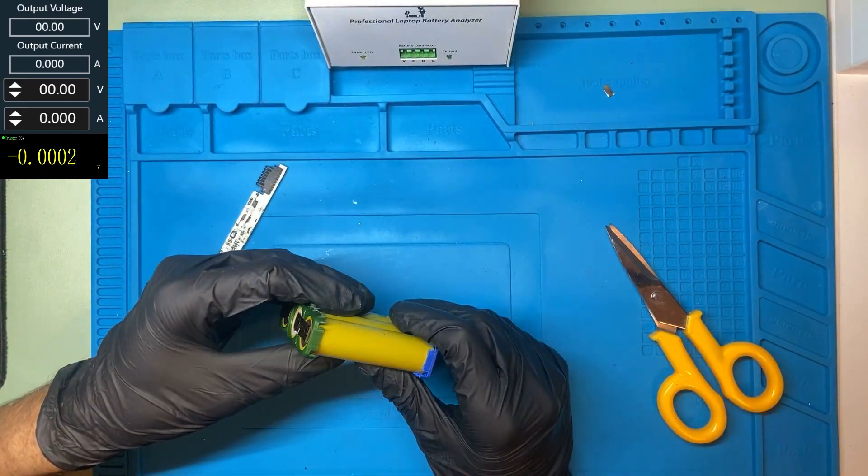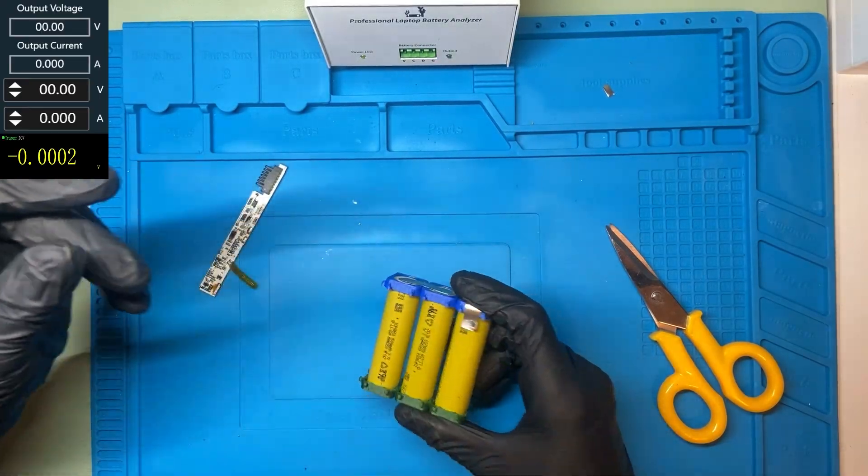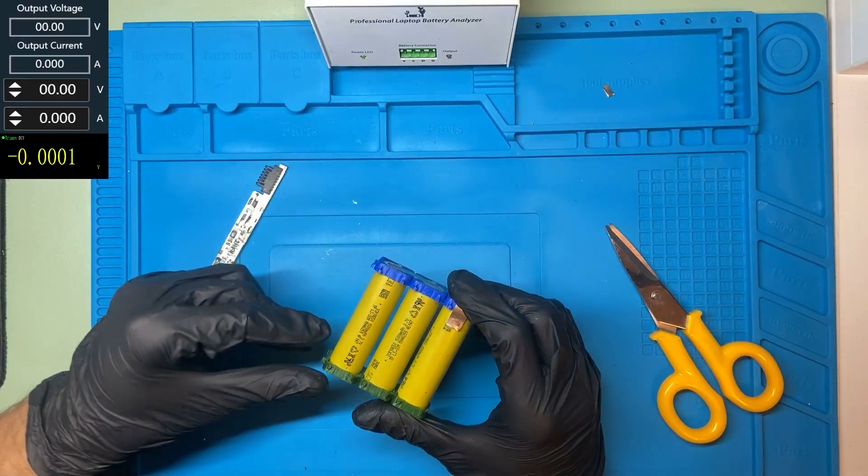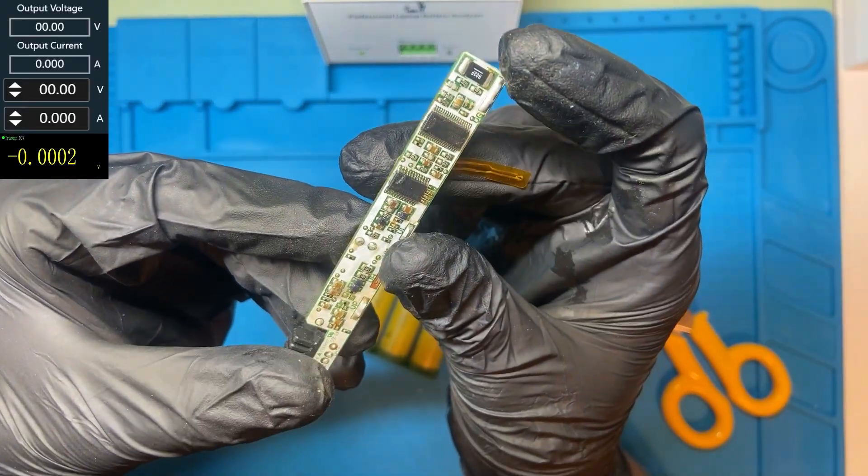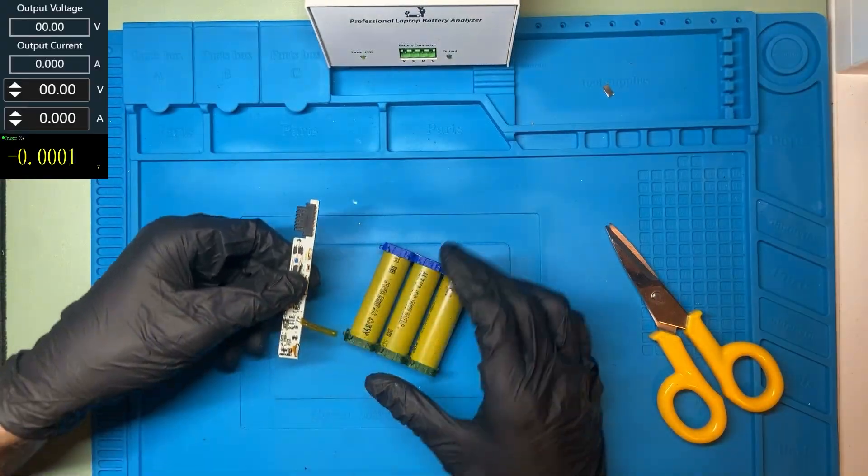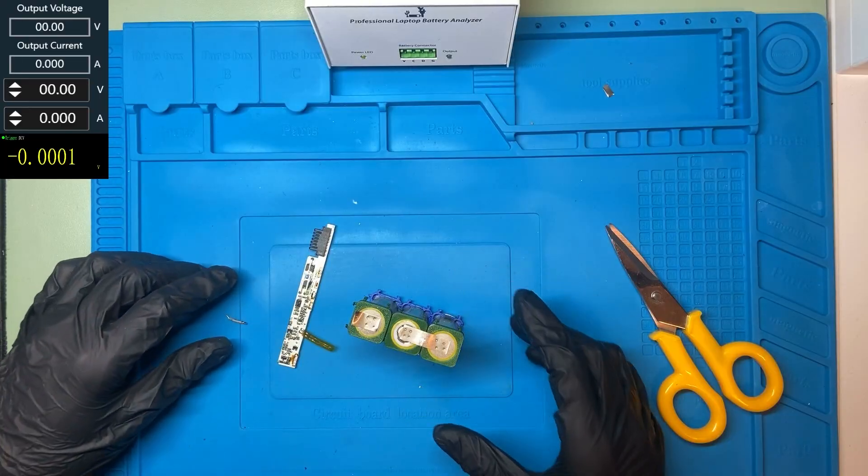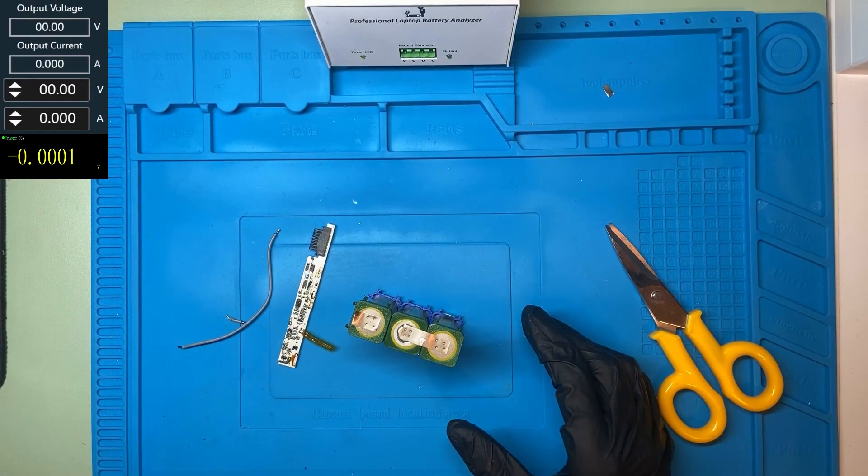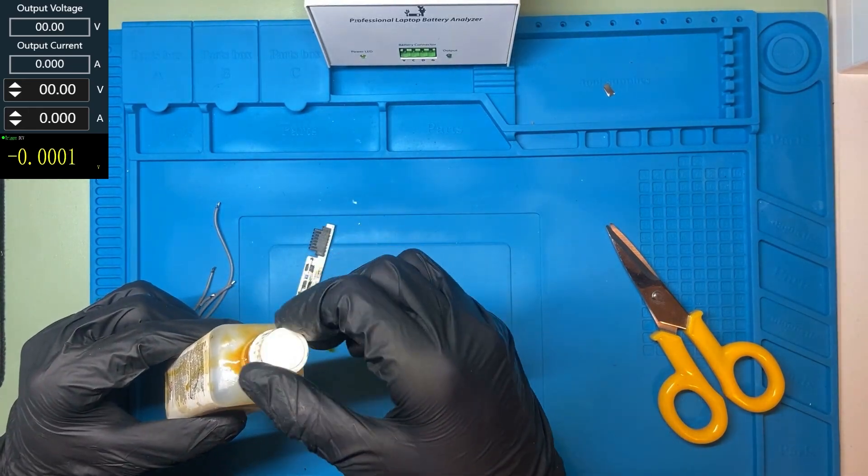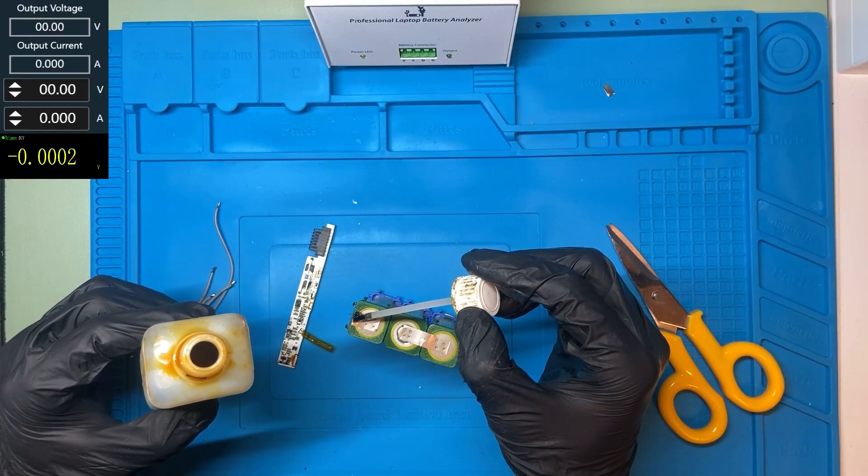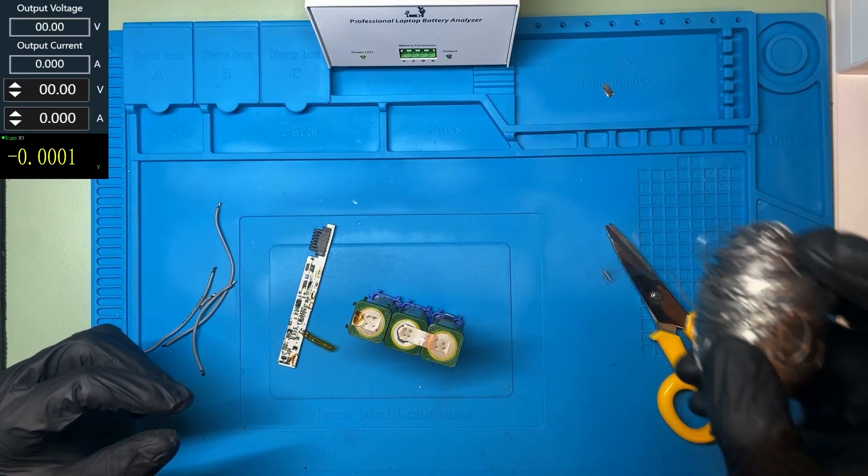The cells pack is now ready. Next I'll sort out some wires from the PCB to the cells. Let's start. Here we got the minus, we're gonna connect the minus to the VG, like VGround. So let's solder the wires, we have here the wires. We're gonna put some liquid flux and we're gonna need some solder wire.